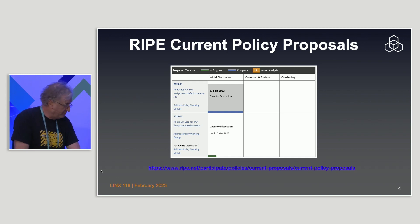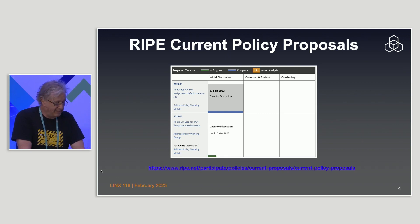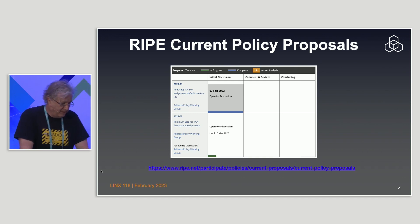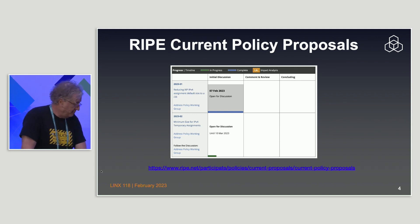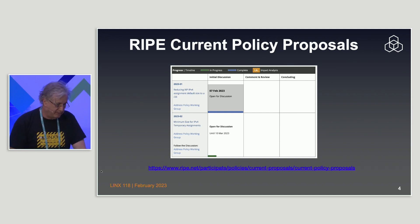There are only two current policy proposals. They are both IPv4-based, as are most policy proposals — IPv6 is singularly free of this sort of thing. Both are in the discussion phase, which means people are talking about them. Let's have a quick look at the two policies.